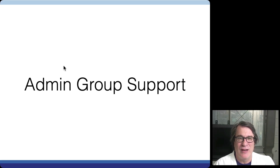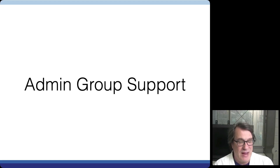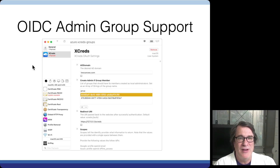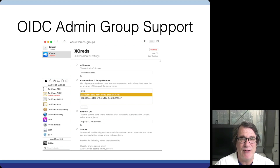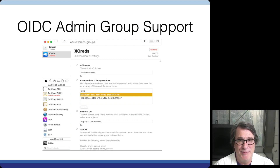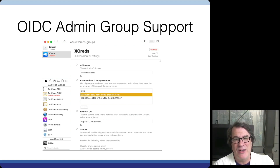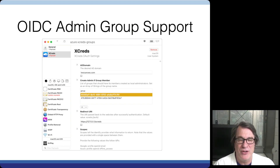That's Active Directory login with XCreds. The next feature is admin group support, and this applies to OpenID Connect. This is a feature folks have asked for for a while — the ability to determine if the user having their account provisioned should be an admin or not. The way it's set up is based on configurations in your identity provider. In preferences, there's a new key called CreateAdminIfGroupMember. If you specify the group UUID, and the identity token has that UUID in the user's group membership, that user will be made an admin. This only applies the first time they log in when the account is provisioned.